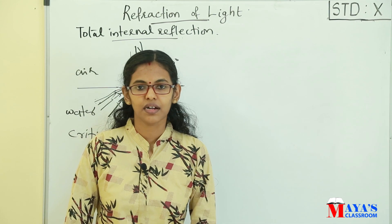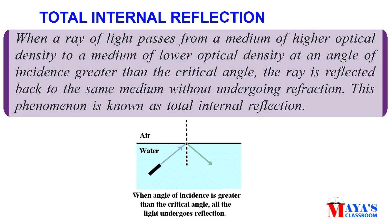What is Total Internal Reflection? When a ray of light passes from a medium of higher optical density to a medium of lower optical density, at an angle of incidence greater than the critical angle, the ray is reflected back to the same medium without undergoing refraction.